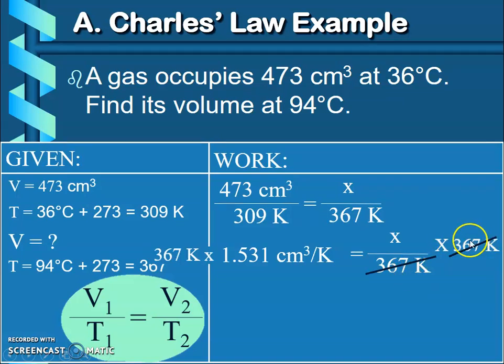On this side my K's cancel out, so that Kelvin I get to drop that unit because they canceled each other out. Type into my calculator 367 times 1.531, and I get 561.88.